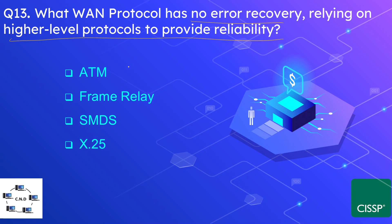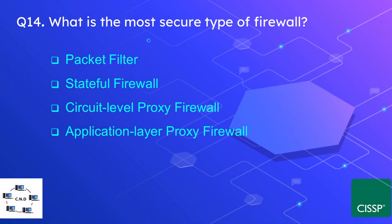Question number thirteen: which WAN protocol has no error recovery and relies on higher-level protocols to provide reliability? The options are ATM, Frame Relay, SMDS, and X.25. The correct answer is Frame Relay. Frame Relay is a packet-switched Layer 2 WAN protocol and features no error recovery.